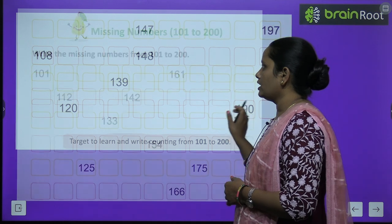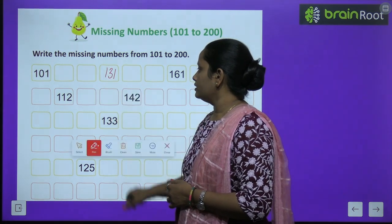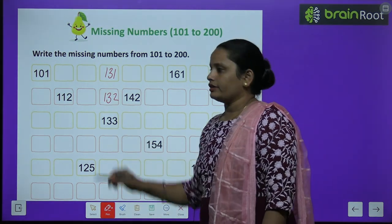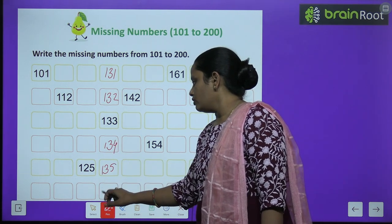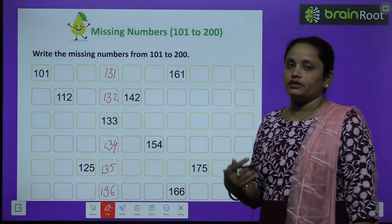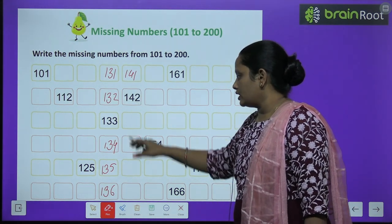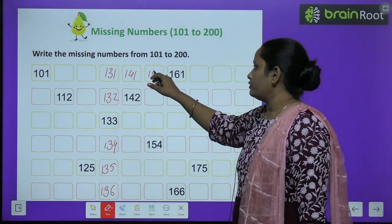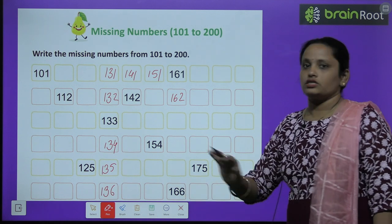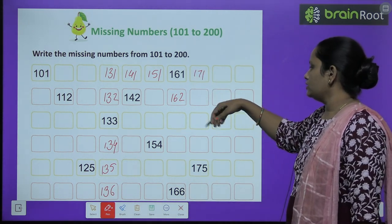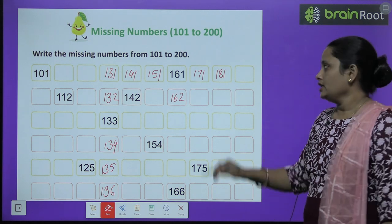After 130 we again write: 131, 132, 133, 134, 135, 136, 137, 138, 139 and 140. Similarly, continuing from 141 to 150, then from 151 continuing to 160. Then 161, 162 continuing to 170. And then 171 continuing to 180, then 181 continuing to 190.